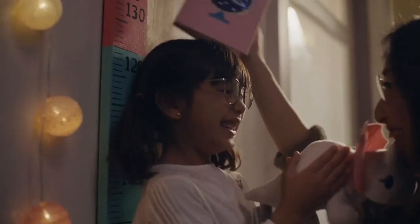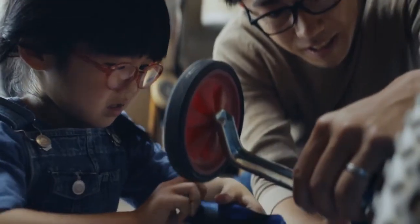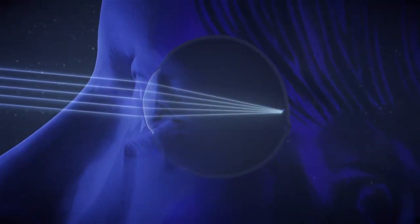Our children are becoming more myopic today, and at an earlier age. Their eyes grow longer and more quickly than they should, resulting in a blurry image.